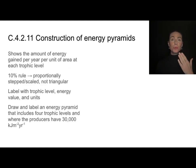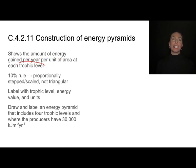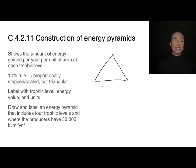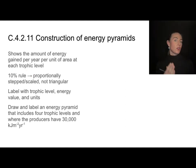We can visually show the amount of energy moving through different parts of our food chain by constructing a diagram called an energy pyramid. Energy pyramids show the amount of energy gained per year per unit of area at each trophic level. Don't draw your energy pyramid as a simple triangle, because that is not proportional — it doesn't represent the actual amount of energy that moves on, since only 10% of the energy moves between one trophic level and the next. It needs to be a stepped or scaled model, not triangular.